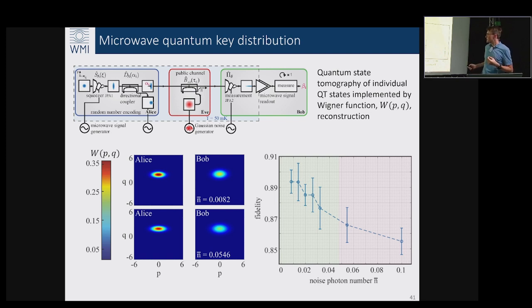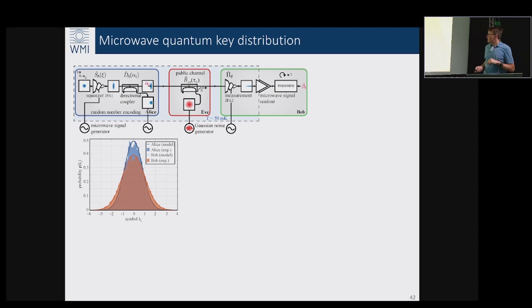Then you typically see that fidelity drops as the number of noise photons which are inserted and coupled by Eve, which is understandable but doesn't allow you to see too much because this is maybe too trivial. What is more interesting is that by using our single shot measurement we can measure the whole distribution of various symbols or keys which are encoded in our states.